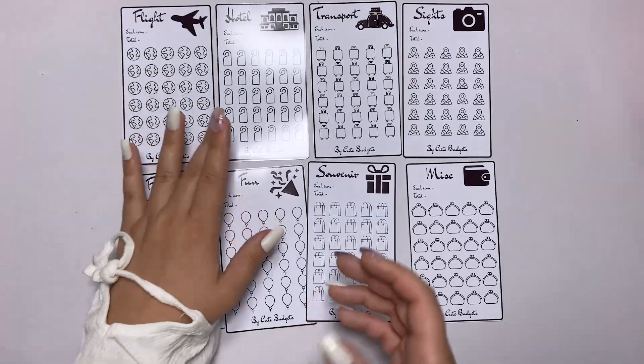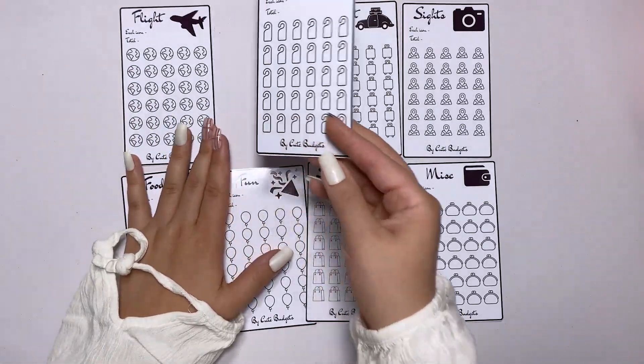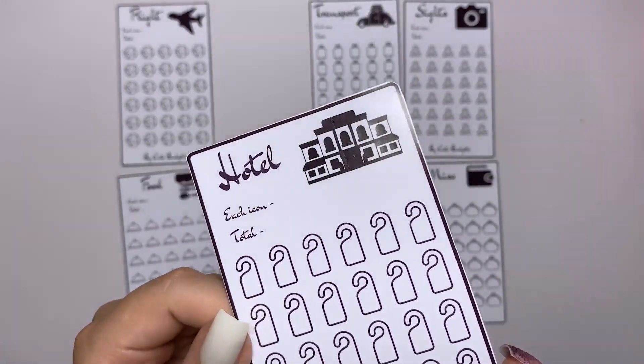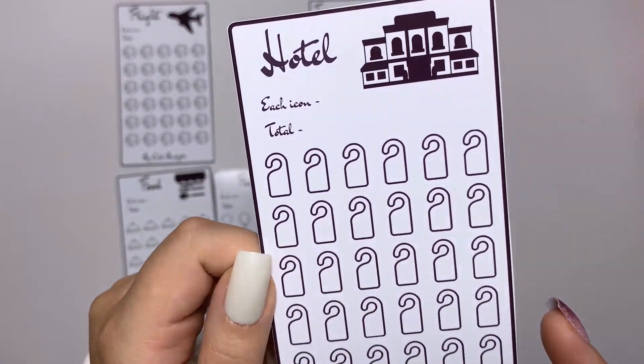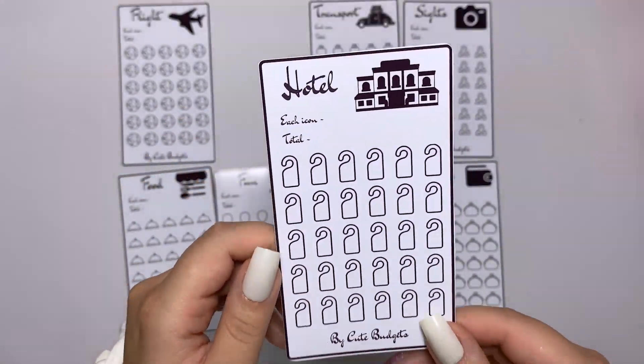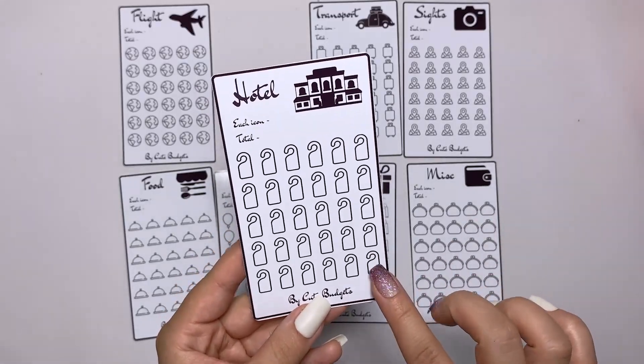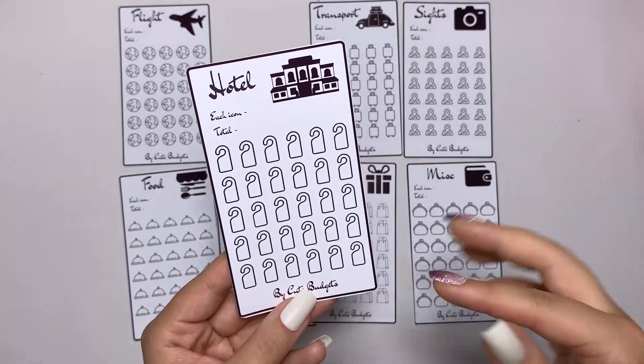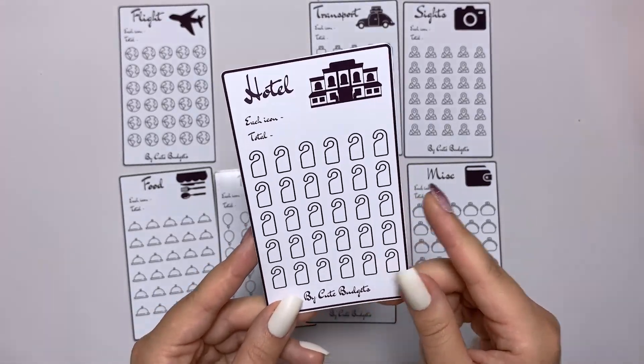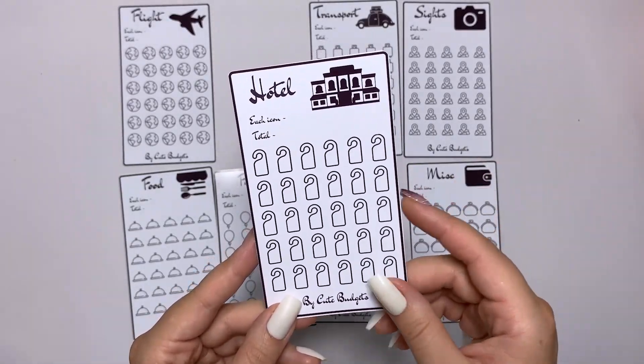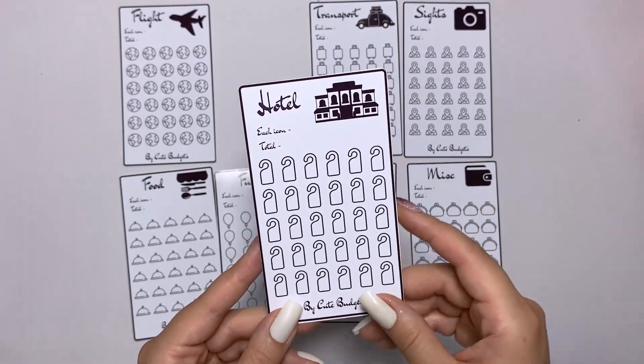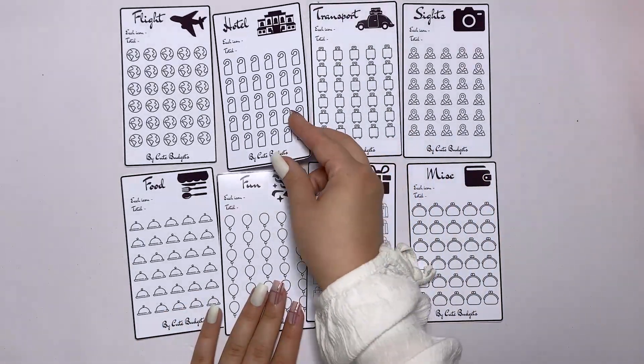Next after flight, we need hotel. Of course we need to go to a hotel or hostel, whatever you prefer. It has 30 signs of hotel icons. The same way, you decide how much you want to save for hotel according to the place where you go.